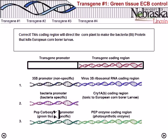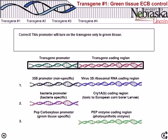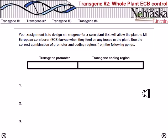Since we need to express this only when there is active photosynthesis, we must take the green tissue-specific promoter from gene three. That's how we can make this transgene work. Then backcrossing is done and insertion of this DNA into the plant, and finally we can get the desired transgene.